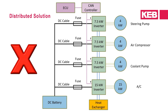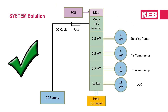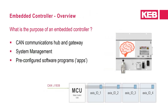When compared to multiple distributed inverter modules, a system solution reduces component count and costs, and simplifies system layout — a much cleaner solution. Lastly, there is embedded control in each system. The embedded controller plays multiple roles: acting as a CAN J1939 communications gateway and hub, managing system health and diagnostics, and supporting PLC programming used for pre-configured programs for easy startup and commissioning, or creating customized functionality.